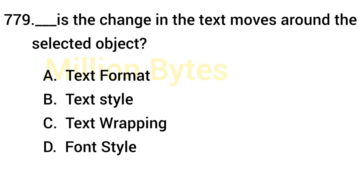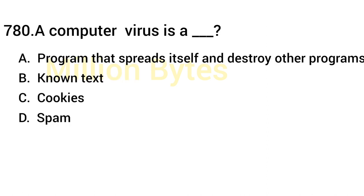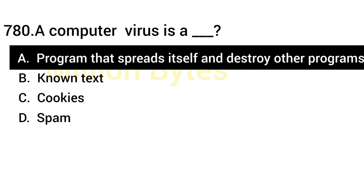The change in text that moves around a selected object is called Text Wrapping. A computer virus is a program that spreads itself and destroys other programs.